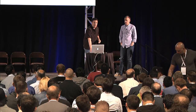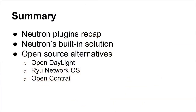This talk is going to be about open source backends for OpenStack Neutron. We're going to do a quick recap of the neutron plugins, a little bit of background on plugins versus ML2 or core plugin versus ML2. We're also going to talk about the neutron built-in plugin — how it solves things like L3 routing and DHCP — and then look at other open source alternatives including Open Daylight, the Ryu plugin, and Open Contrail.